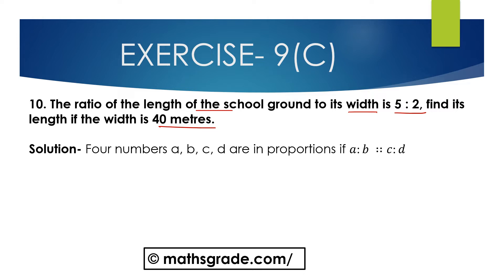Four numbers A, B, C, D are in proportion. Then we can write A is to B is proportional to C is to D. Here, 5 is to 2, that is 5 divided by 2, is proportional to the length. Length is to be found, so suppose the length is X, divided by width which is 40 meters.